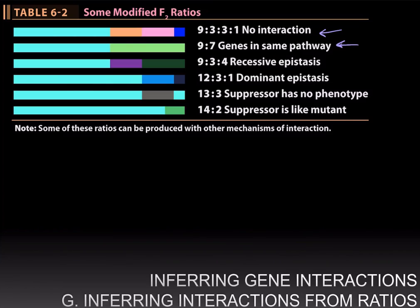If the genes act in the same pathway, that results in a 9:7 ratio. A 9:3:4 ratio implies recessive epistasis, where the homozygous mutant genotype for one gene hides the mutant phenotype of the other gene. Similarly, in dominant epistasis, where the dominant allele of a gene hides the mutant phenotype of the other gene, you get a modified ratio of 12:3:1.